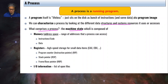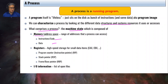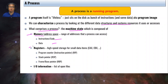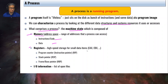The machine state has several components. First, memory — specifically the address space of the process, which is the range of addresses a process can access. It contains instructions, assembly code, object code, or static data that is part of the program when it was created. Another component of the machine state is registers — high-speed storage for small data items. In the x86 architecture, examples of general-purpose registers are EAX, EBX, RAX, and RBX.